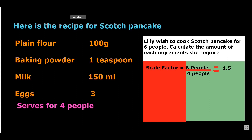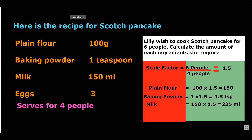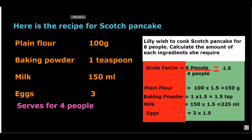Now, what we will do is multiply this scale factor of 1.5 with each ingredient quantity. Plain flour required will be 100 multiplied by 1.5, which gives 150 grams. Baking powder required is 1 multiplied by 1.5, which gives 1.5 teaspoons. Milk required will be 150 multiplied by 1.5, which gives 225 ml. And lastly, eggs required will be 3 multiplied by 1.5, which gives 4.5.